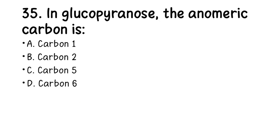Number 35. In glucopyranose, the anomeric carbon is: A. Carbon-1, B. Carbon-2, C. Carbon-5, D. Carbon-6. The answer is A, carbon-1.